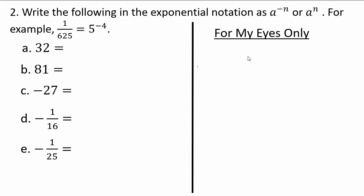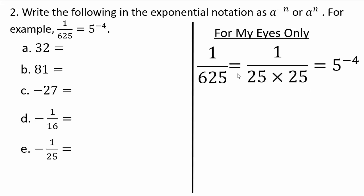Let's do 1 over 625. If you factor that: 1 over 625 is 1 over 25 times 25, and 25 is 5 times 5 — another 5 times 5 — so that's 5 to the 4 in the denominator, which makes it 5 to the negative 4 power. So negative 4 is your exponent and 5 is your base.